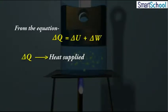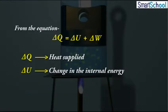Here, delta Q is the heat supplied. Delta U is the change in the internal energy, and delta W is the work done.